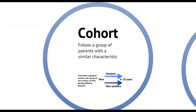A cohort is a group of people who share a characteristic. That could be a disease, such as periodontitis or oral cancer. It could also be a habit, such as smoking or exercising. It could be demographic variables, such as the year in which people are born, or the year in which they graduated from university. A cohort study takes that group who share the characteristic of interest and follows them over time to see if that characteristic is associated with a particular outcome of interest.